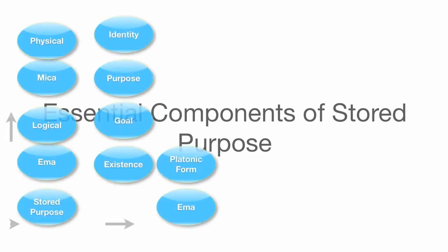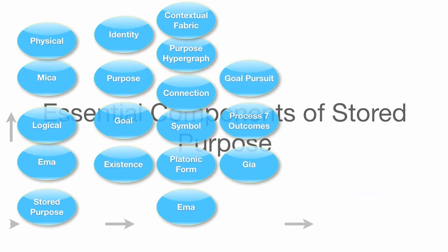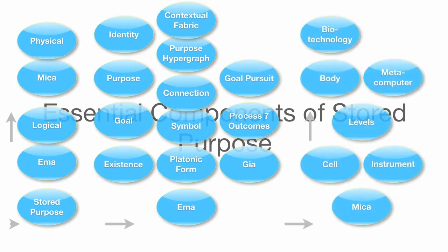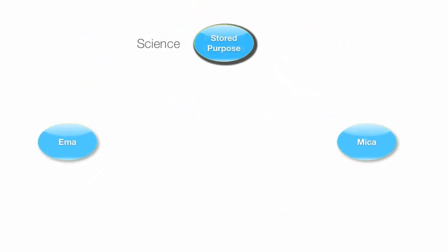So today, we'll talk about those essential components of stored purpose, including the two big architectures, EMA and its existence, Platonic Forms and General Intelligence Algorithm, and MECA, which is the construction model that covers cells and instruments and other mecha technology.